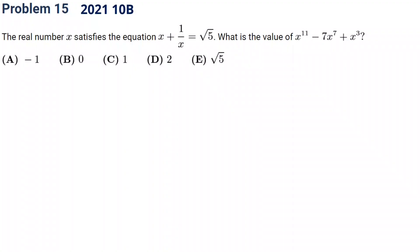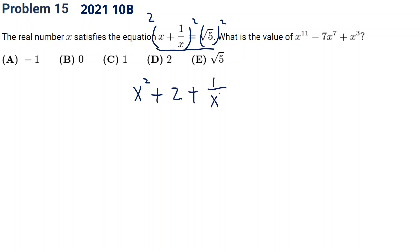Let's see the next one — 2021 10B problem 15. The real number x satisfies this equation. What's the value of this expression? Since there's a square root, we naturally square both sides. This gives x squared plus 2 (the middle 2ab term) plus 1 over x squared equals 5. Moving the 2 over, we get x squared plus 1 over x squared equals 3.